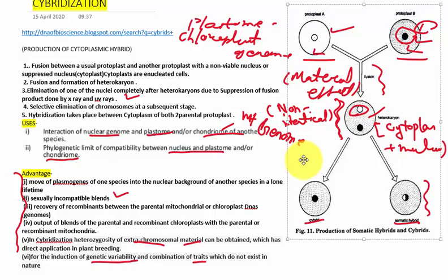But in case of cybrid, only the cytoplasmic content of both the parents are involved. But one nuclear content is eliminated and another nuclear content is getting merged to the plastome and chondriome. So this is all about cybridization.